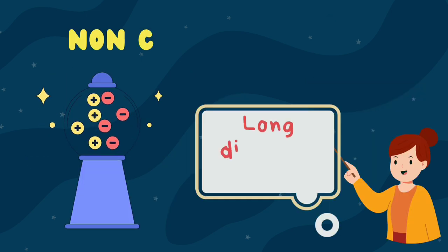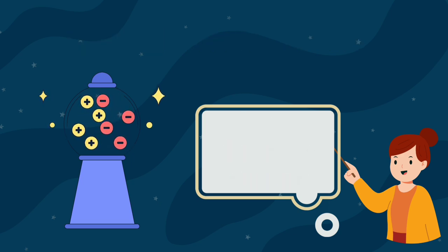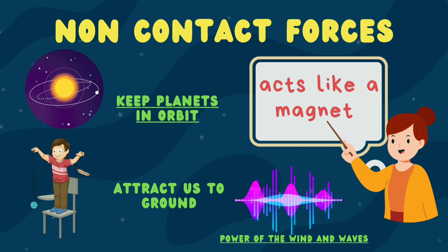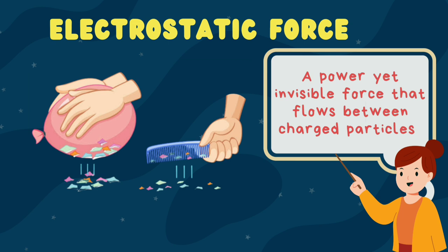Non-contact forces are the long-distance runners of the physical world, reaching out to influence objects from afar. They are the forces that keep planets in orbit, attract us to the ground, and part the wind and waves. The electrostatic force, also known as Coulomb's force, is the force of interaction between electrically charged particles. We can observe this when you rub your feet on a carpet and touch a metal object, or when paper sticks to a comb rubbed with hair, or dust is attracted to a television screen.